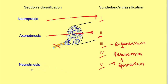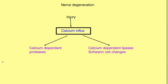Seddon's classification mainly discusses disruption of the outer connective tissue sheath — the epineurium — without much detail, so Sunderland's third and fourth degrees do not have direct counterparts in Seddon's classification; it is simply a more detailed classification. Now, certain changes occur in the neuron after injury. Whenever an injury occurs, there is an influx of calcium into the neuron, leading to activation of calcium-dependent proteases and calcium-dependent lipases.